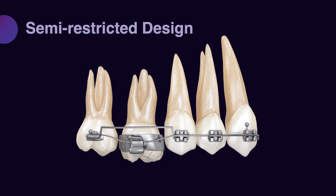In semi-restricted design, the anchor unit has two jobs. First, response to primary forces and moments. However, it also needs to be prepared for the secondary forces and moments that control the type of tooth movement. Therefore, your design needs to be ready for both types of responses at the same time.